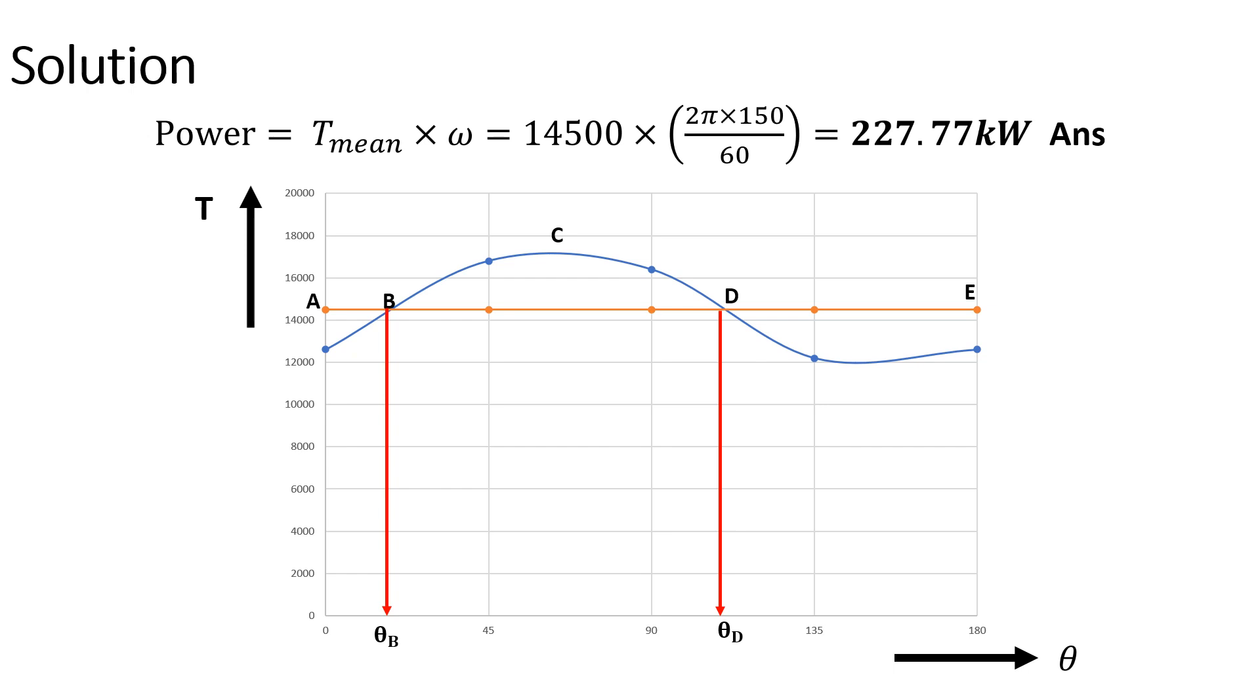Where B, C, D is excess energy. At points B and D, the torque equals the mean resisting torque, and we are able to get the area of the graph under the points B and D.